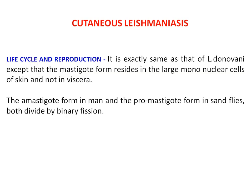The life cycle and reproduction is exactly the same as that of Leishmania donovani, except the amastigote form resides in the large mononuclear cells of the skin — that is, plasmosides — and not in the viscera. This is the primary difference between visceral leishmaniasis and cutaneous leishmaniasis. Cutaneous refers to the skin, the outermost covering of the body, whereas visceral affects the internal organs like liver, spleen, etc. But here it affects only the outermost covering of the body, that is the skin.